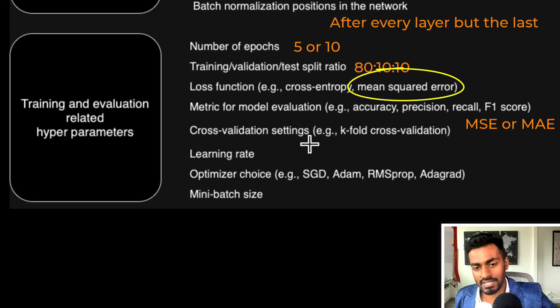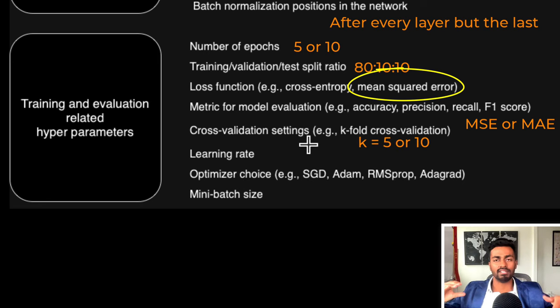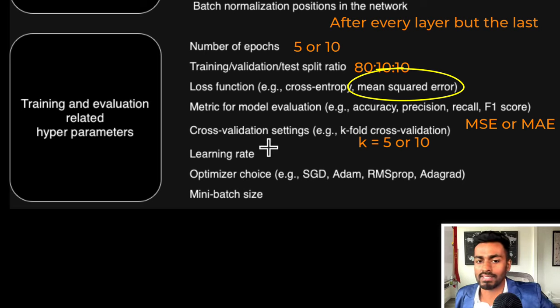For cross validation settings, we can use k-fold cross validation in which case we would take the entire training data and split it up into k chunks. The value of k could start out to be like 5 or 10, which would be a reasonable starting value.